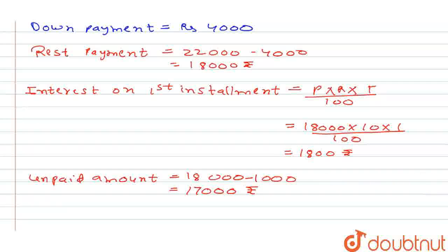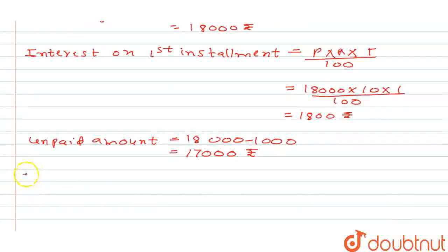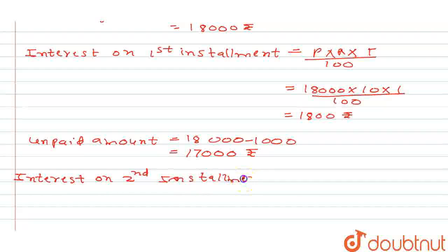Now interest on the second installment. Again using PRT upon 100, so P this time is 17,000, R is 10, T is 1 upon 100.